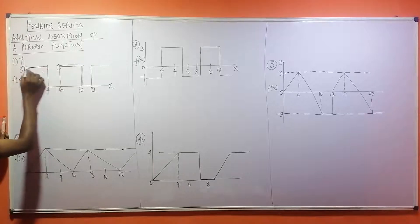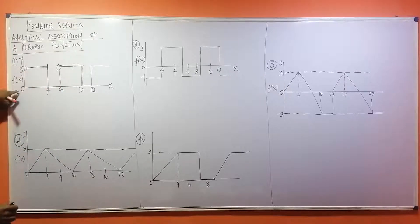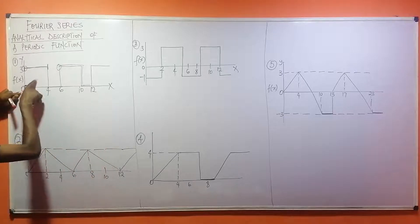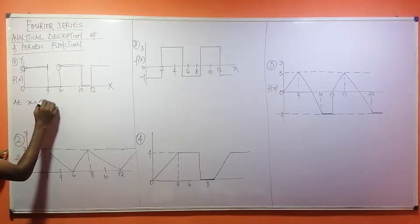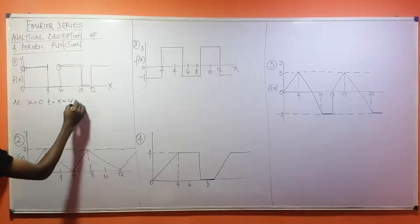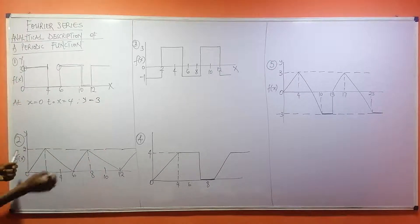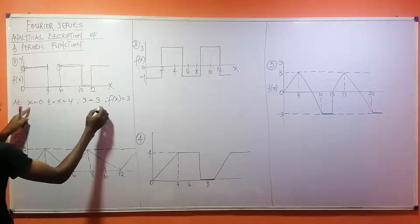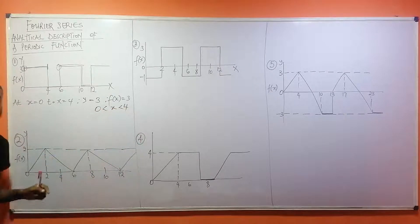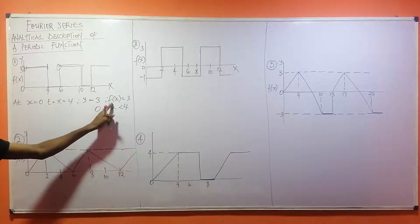Starting from here to here, the line remained straight. At this first part, the values of x are from zero to four. So at x equal zero to x equal four, y is equal to three. Therefore f(x) = 3, and the range is 0 < x < 4.